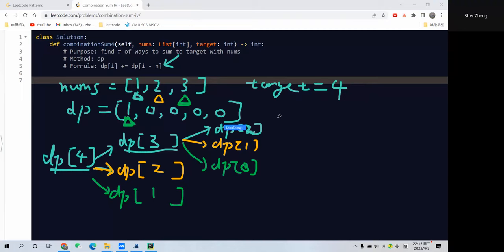For DP[2], we can choose either deduct 1 or deduct 2, because deduct 3 will result in negative and would be invalid. So deduct 1 gives DP[1], and deduct 2 gives DP[0].